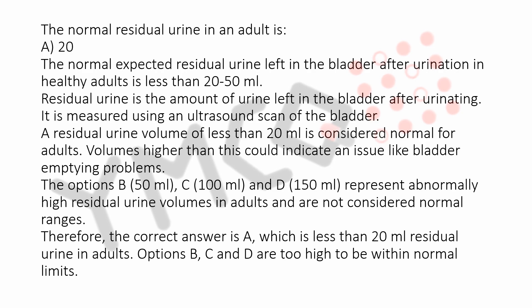The normal expected residual urine left in the bladder after urination in healthy adults is less than 20 to 50 milliliters. Residual urine is the amount of urine left in the bladder after urinating. It is measured using an ultrasound scan of the bladder. A residual urine volume of less than 20 milliliters is considered normal for adults.